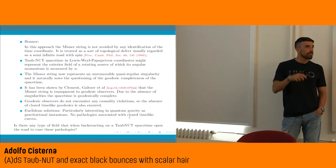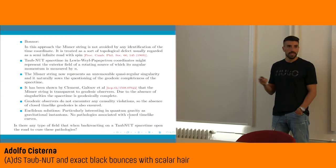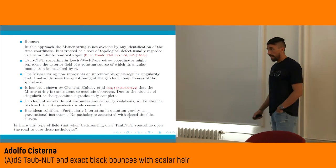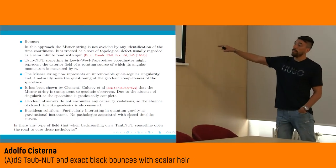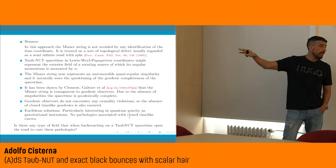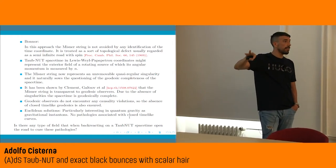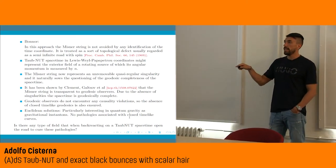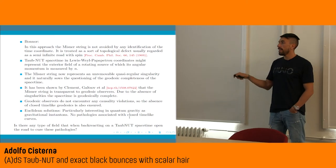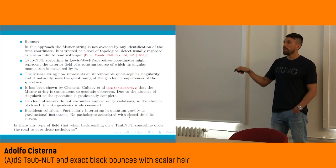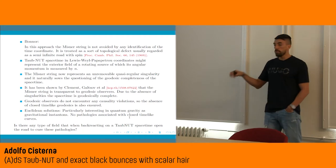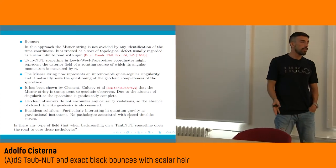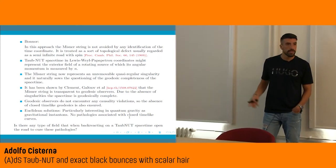We are going to continue in the Lorentzian case, because we are working with black holes. A question we can ask ourselves is: so far we have talked only about vacuum solutions — everything I told you before was Einstein theory in vacuum. Is there any type of field that when back-reacting on a Taub-NUT spacetime opens the road to curing these pathologies? Can we put some kind of matter on top of our Taub-NUT spacetime to partially solve the Misner string or causality violations?